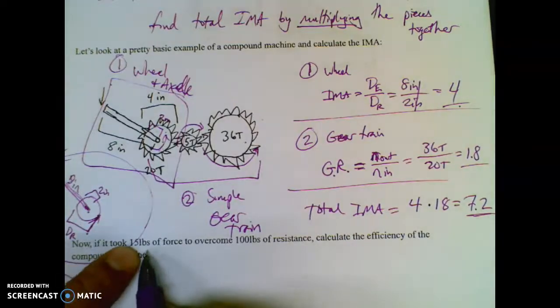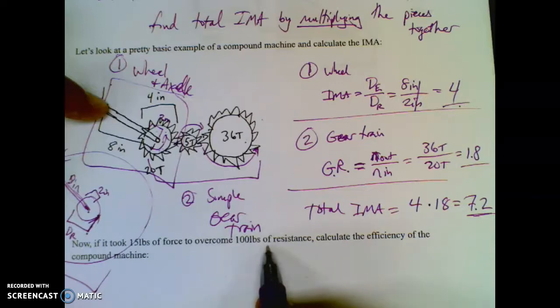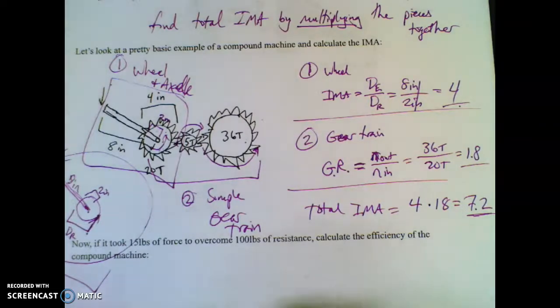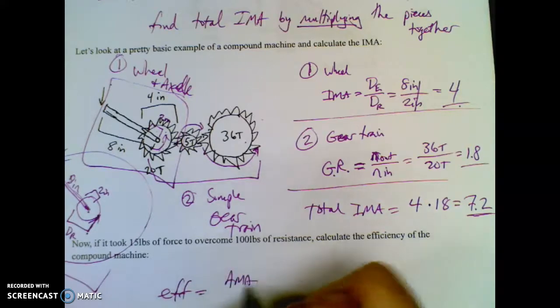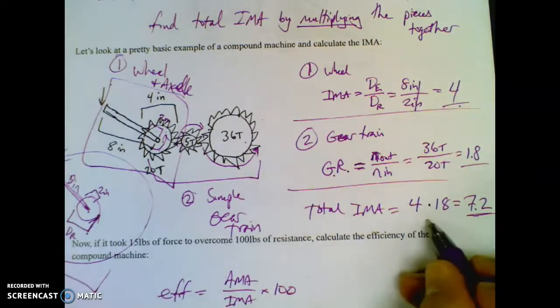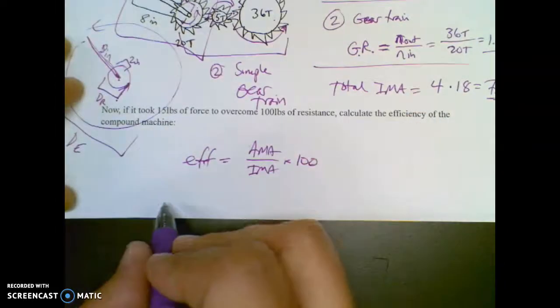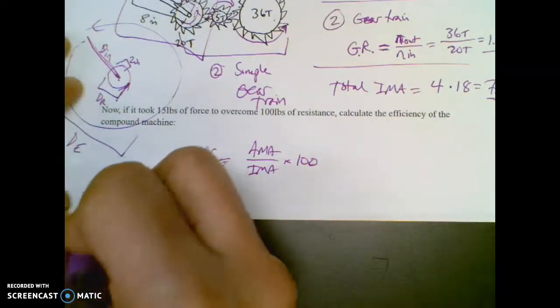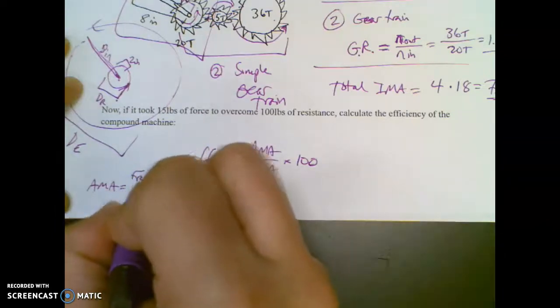Now it says if I took 15 pounds of force to overcome 100 pounds of resistance, calculate the efficiency. Whenever I see efficiency, I want to do AMA over IMA times 100. Well, I just found out IMA, right? So that means the words they gave me probably have something to do with AMA.